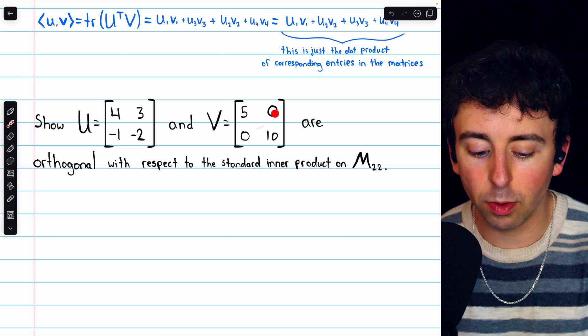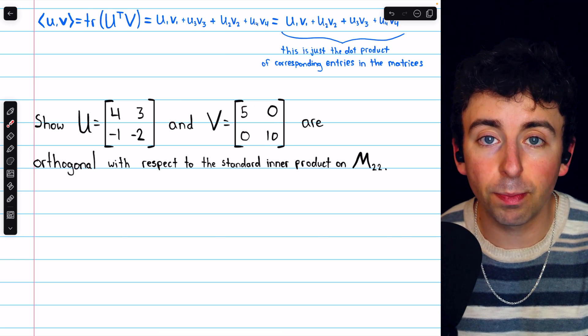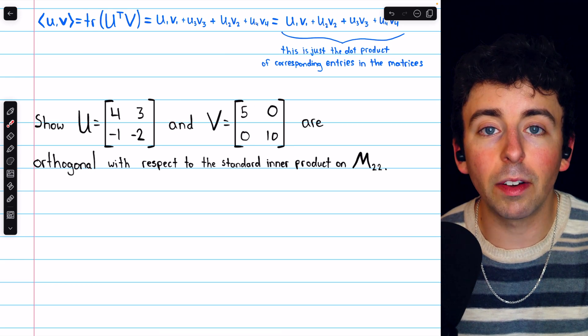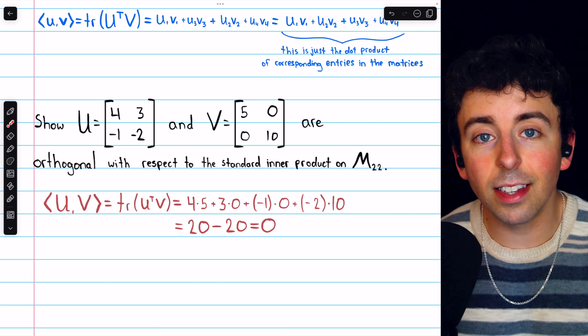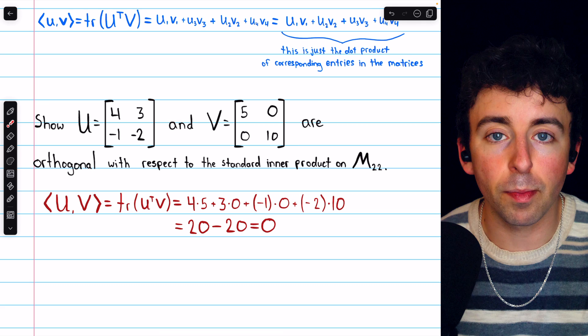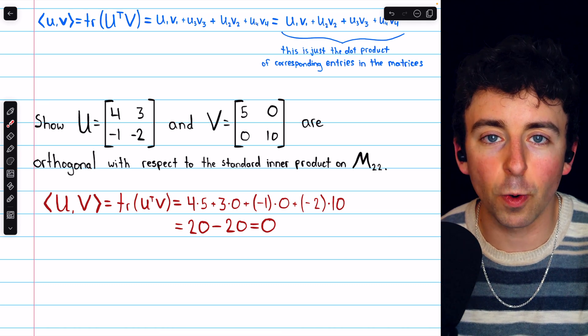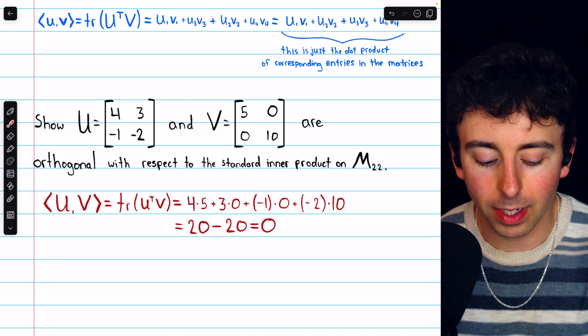Now, to show these two matrices are orthogonal with respect to this inner product, we'll have to compute their inner product and show that it equals zero. And since this inner product just ends up being the sum of the products of the corresponding entries, this is a very easy computation.